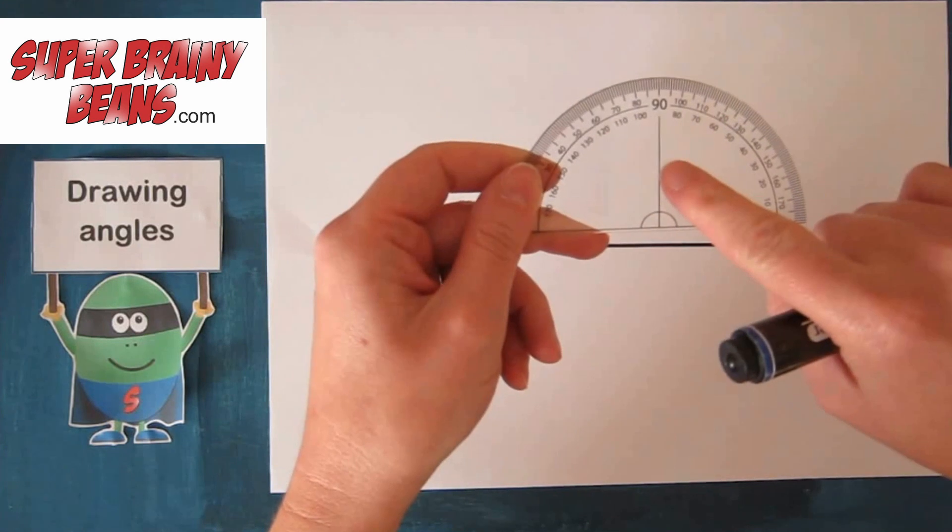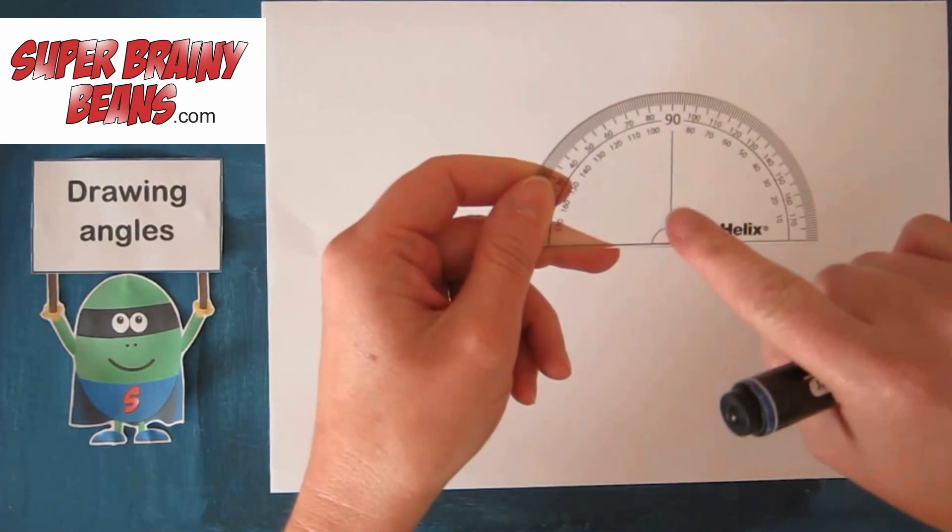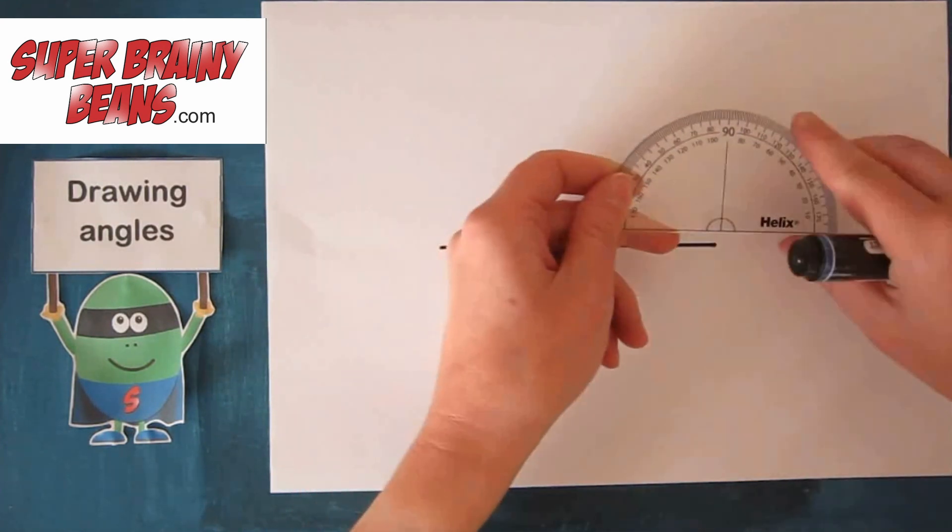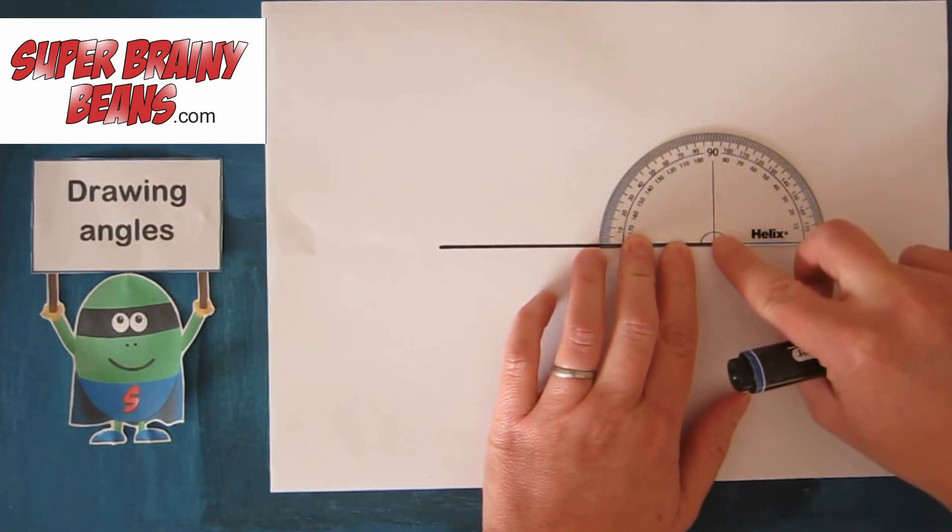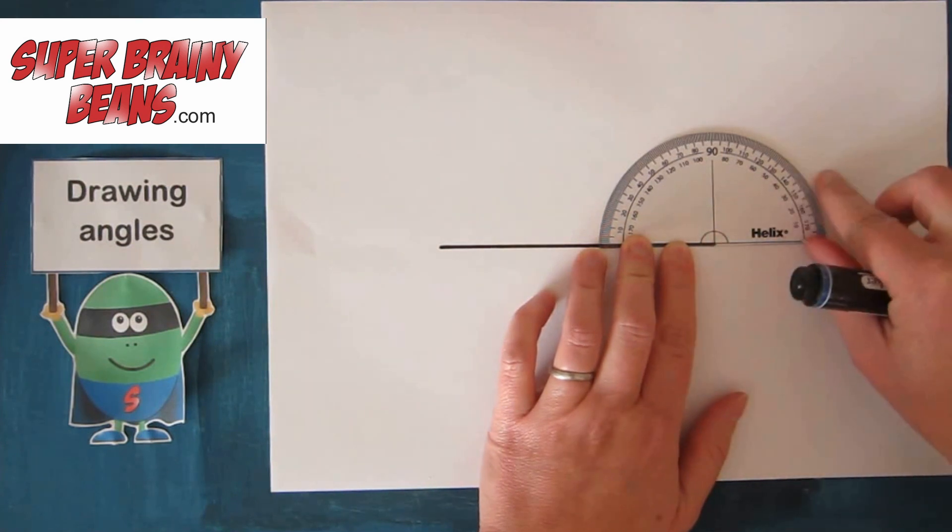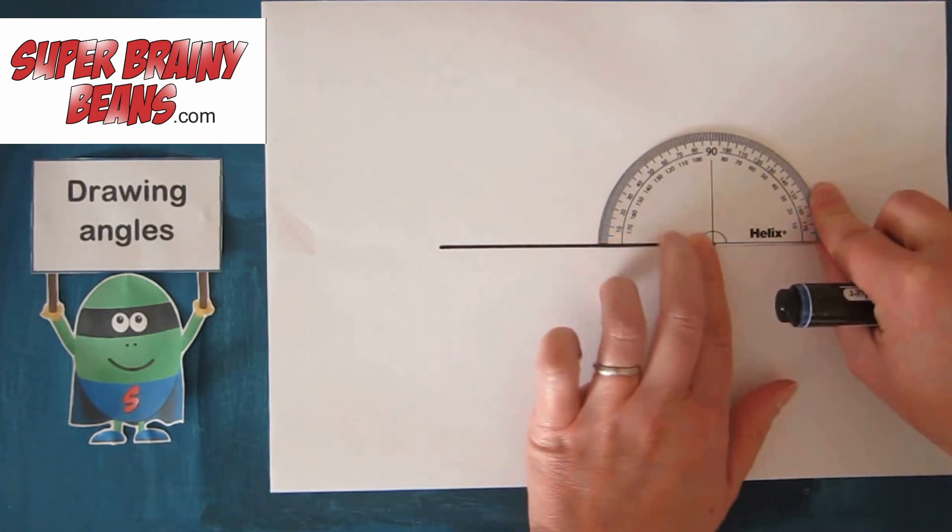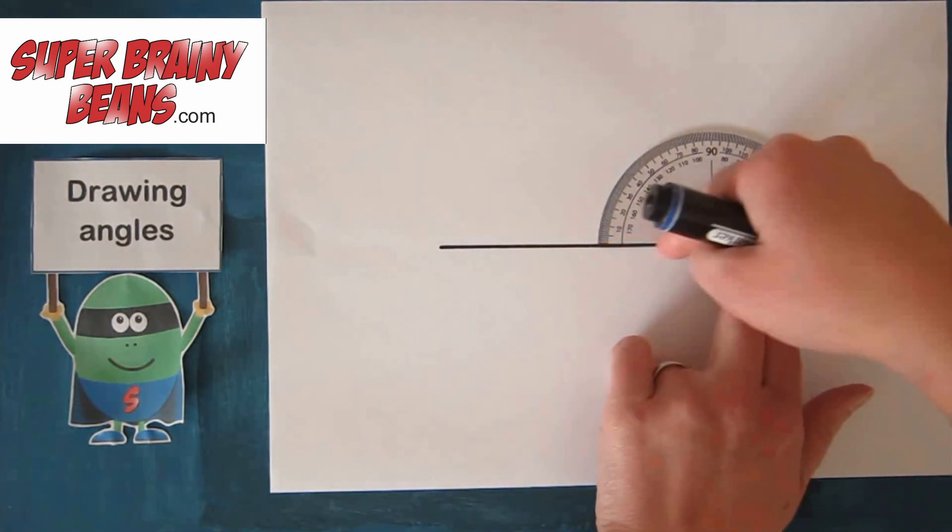We're going to place this protractor here on the line. Right in the center of the protractor you'll have a dot or a line that shows you the center. Then line this up with your line.